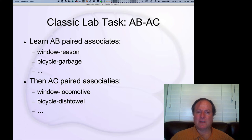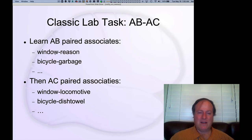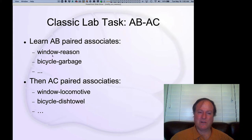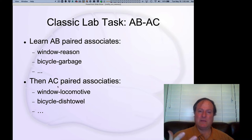The classic experimental paradigm used to look at episodic memory is to learn arbitrary paired associates. In this case, we're going to learn what we call the A-B pairs, which involve a set of words that are the A part, and then B is another set of words. So 'window' is the A exemplar for the first pair — window-reason, bicycle-garbage, and so on. You just see these pairs of words.